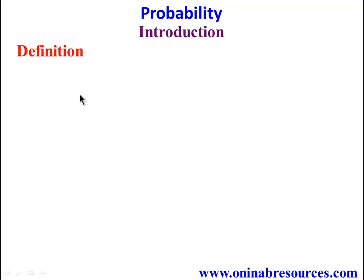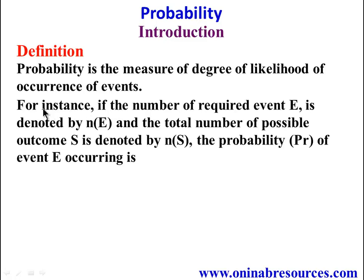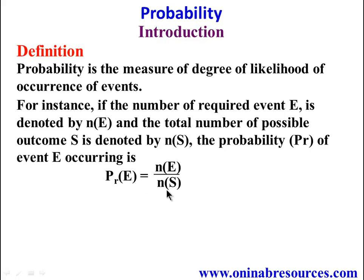First, we look at the definition. Probability is the measure of degree of likelihood of occurrence of events. For instance, if the number of required event E is denoted by n(E) and the total number of possible outcomes S is denoted by n(S), then the probability P(E) of an event occurring is P(E) = n(E) / n(S).